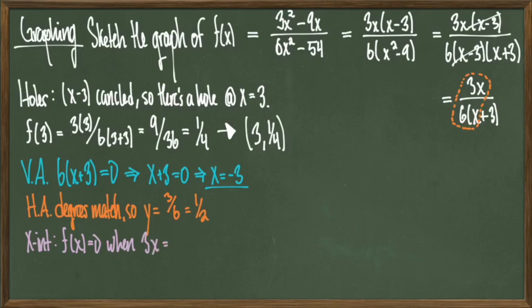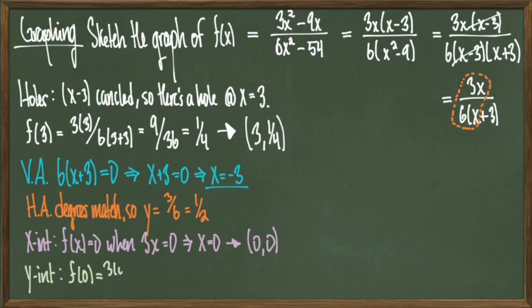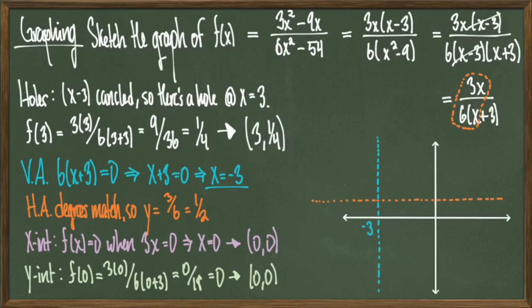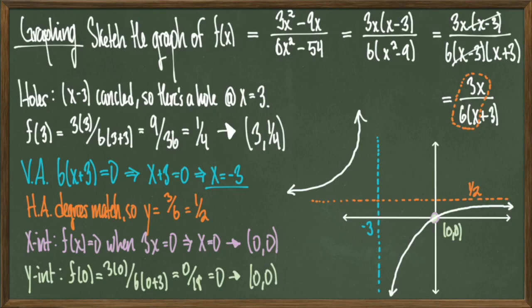To find the x-intercept, I set the numerator 3x equal to 0, giving x equals 0, so the x-intercept is the point 0, 0. Evaluating f at 0 also gives 0, so both the x and y-intercepts happen at the origin. I draw the vertical asymptote at x equals negative 3, the horizontal asymptote at y equals 1 half, and plot the intercepts at the origin. Since a point on the graph lies in the bottom right-hand region divided by the asymptotes, the rest of the graph lies diagonally opposite. Finally, I erase the portion at the hole point 3, 1 fourth and fill it in with an open circle, and we're done.